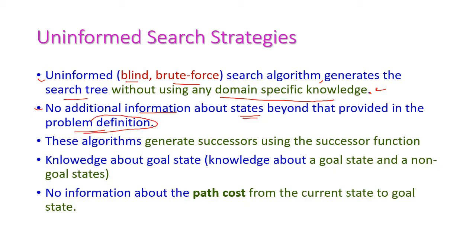We get knowledge only from the problem definition, and this algorithm generates successors by using the successor function. That is, this algorithm will generate the successor states using the successor function, and it has knowledge about the goal state — it knows which is the goal state and which are not goal states — and also has information about the path cost from the current state to the goal state. These are the uninformed searching strategies.